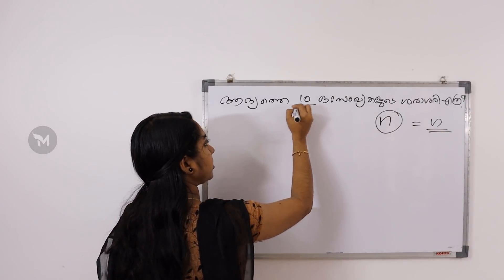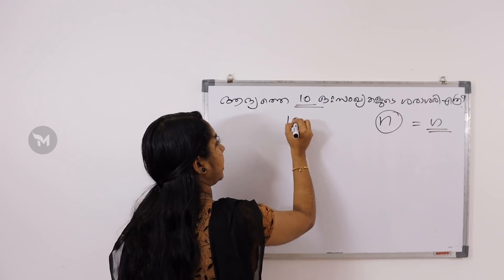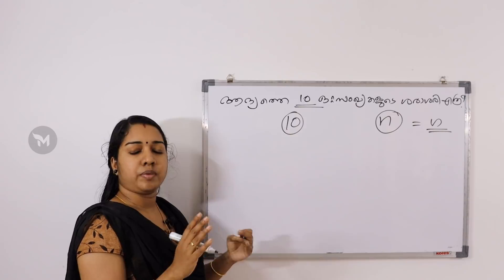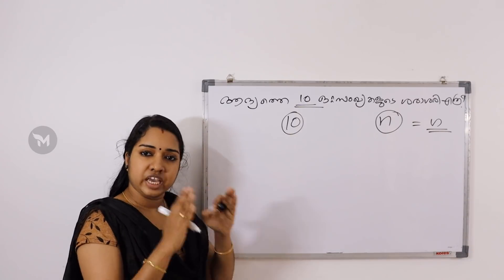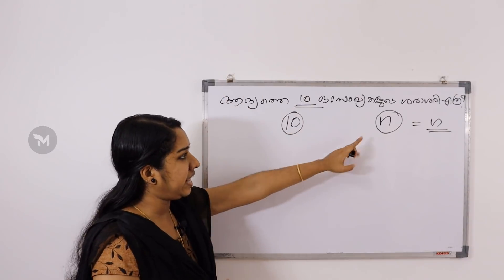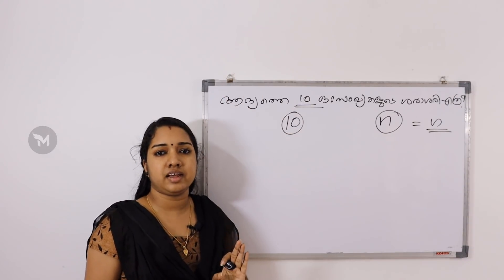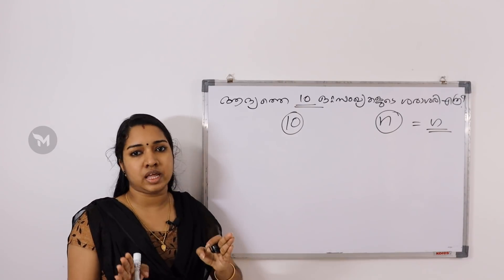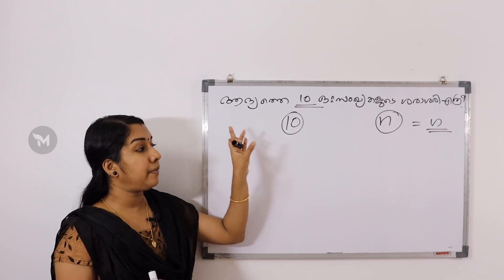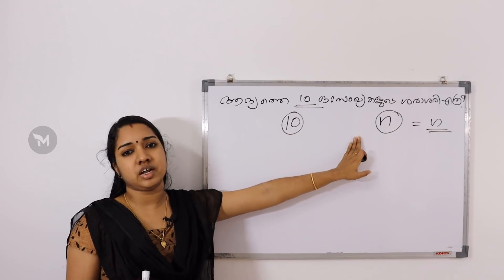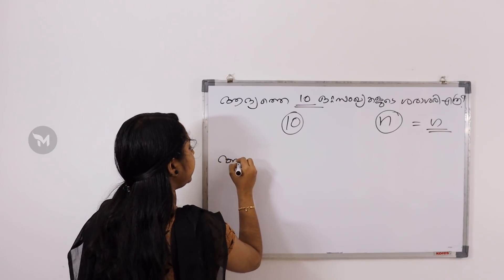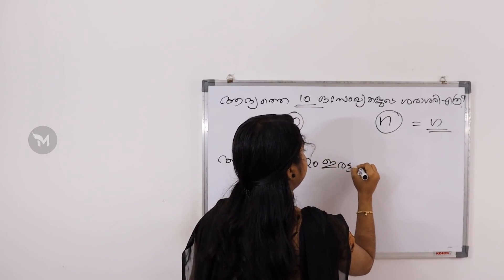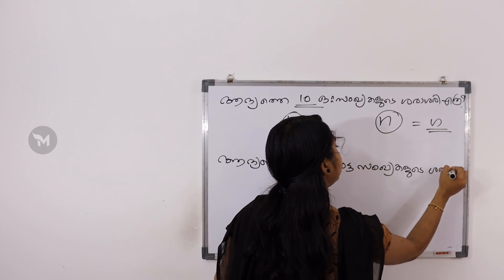Where n equals 10, you can see what happens. When n equals 20, you can see. When n equals 25, that means n is equal to 5. If you think about the exam, the first one is n and the second one is n.